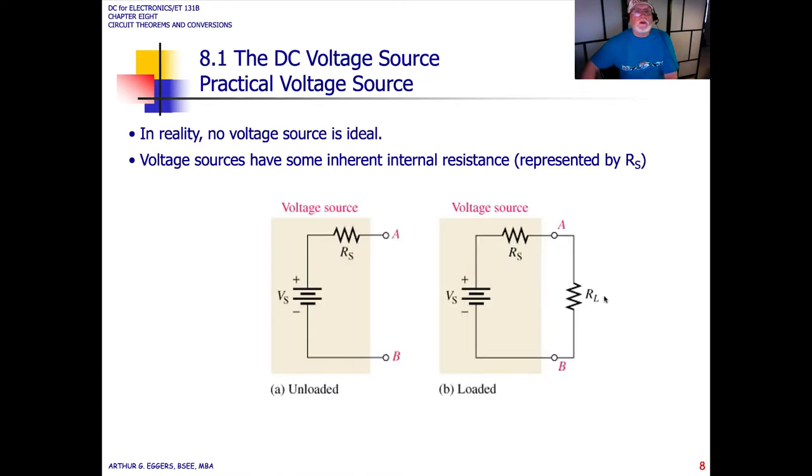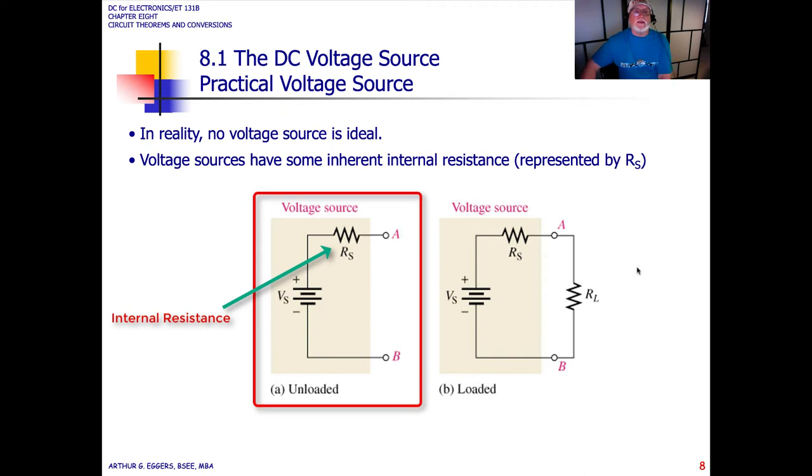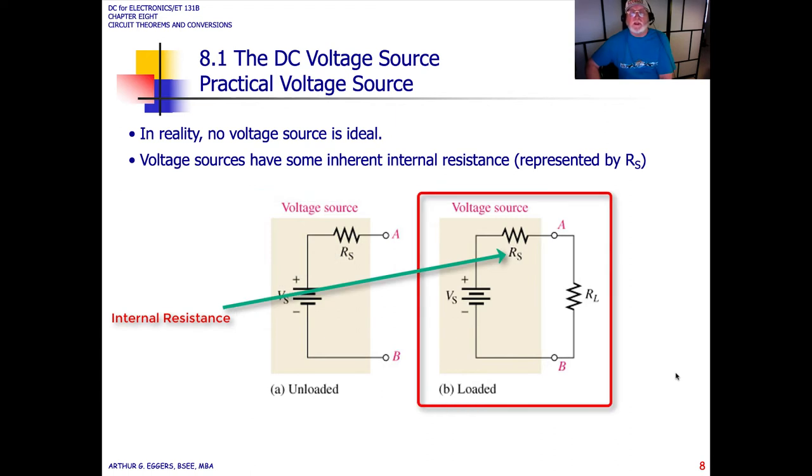In reality, no voltage source is ideal. You have to think about that—there's never a free lunch. Voltage sources have inherent internal resistances, and so we can model the internal resistances by some R sub S. Sometimes it's significant, sometimes we say that the internal source can be neglected and it becomes insignificant.